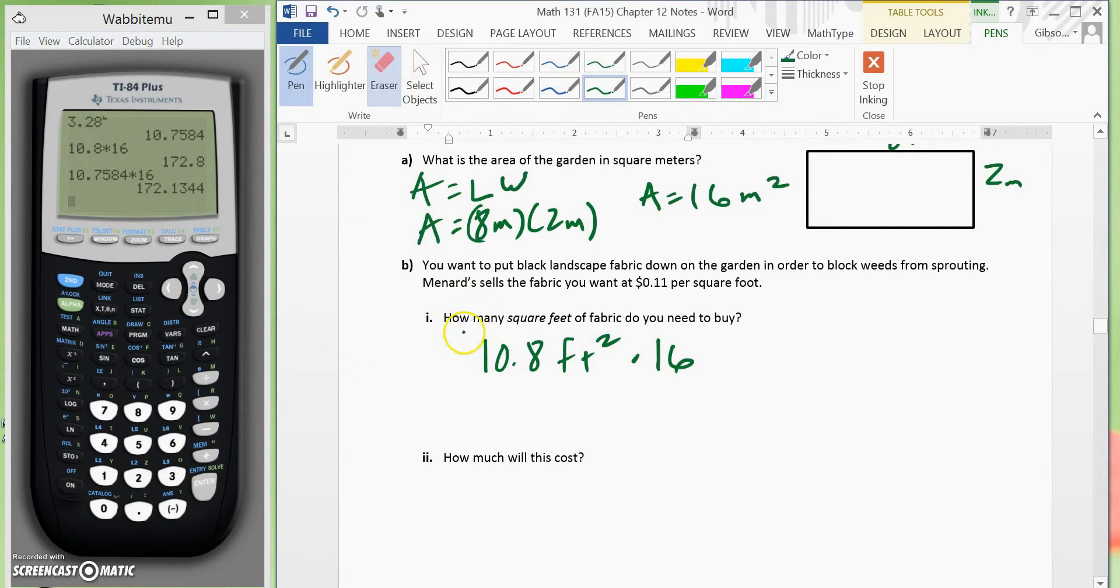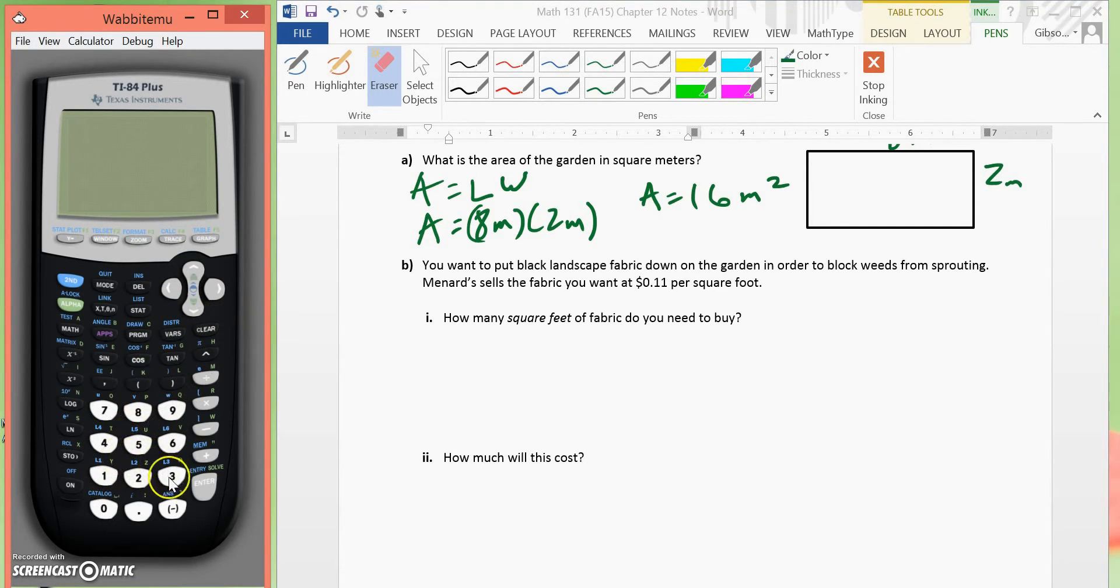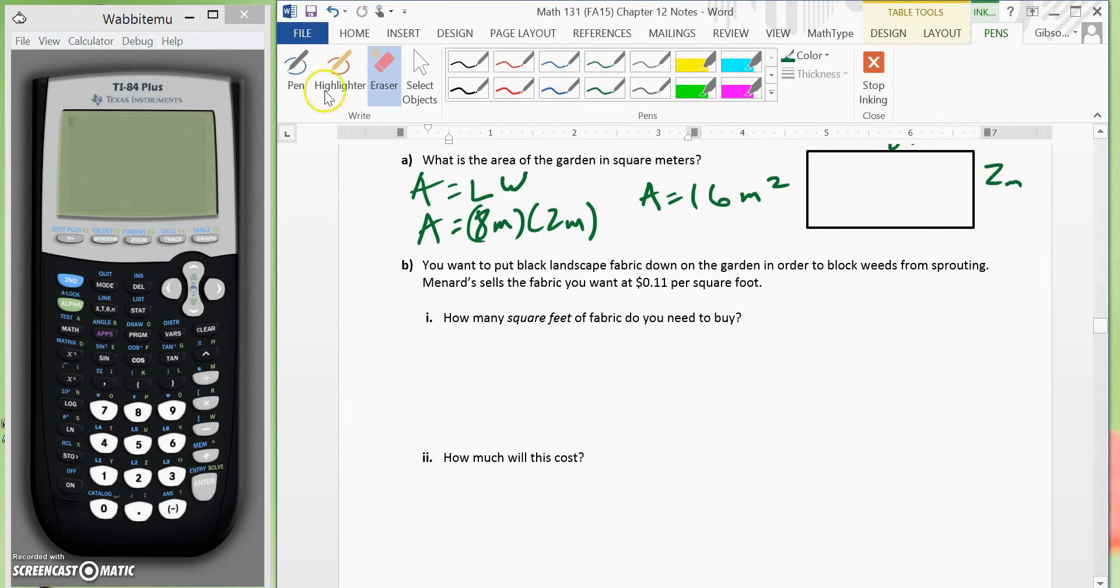Okay, class, I want to change something here for this problem. Since we are utilizing a calculator, why don't we do this first? Why don't we take our, well, first of all, we know we would have to take the 16 square meters, and we have to change that to square feet.